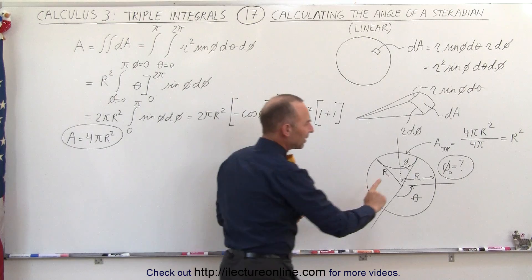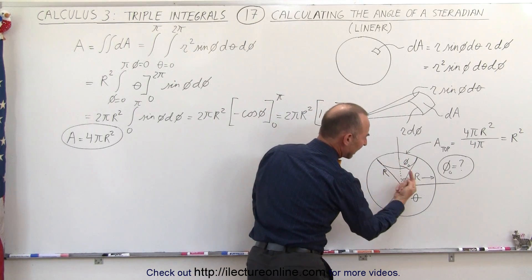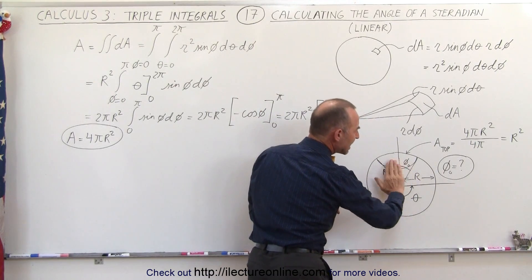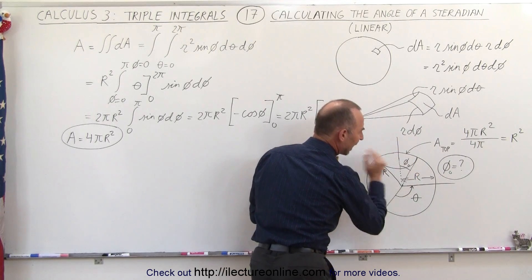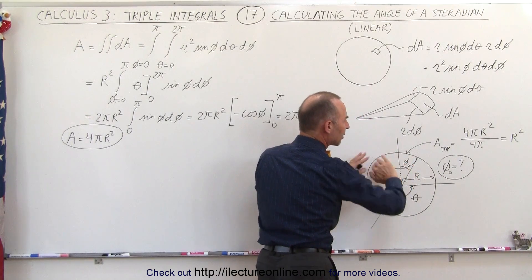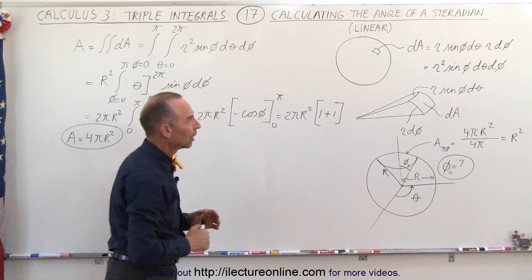What we're trying to do is find out: if the solid angle had a circular shape, what would be the angle from the middle of that area down to the edge of the area? We're looking for this angle right here to get a feel of how big a steradian is.